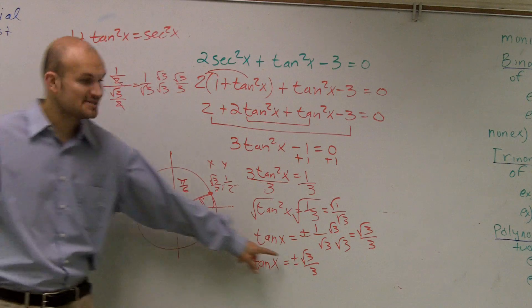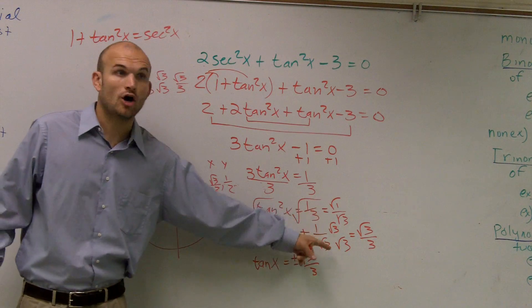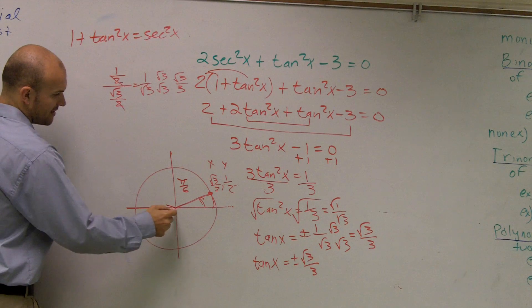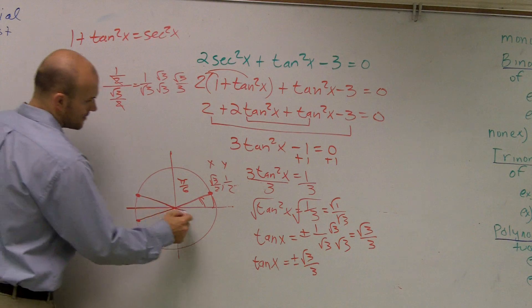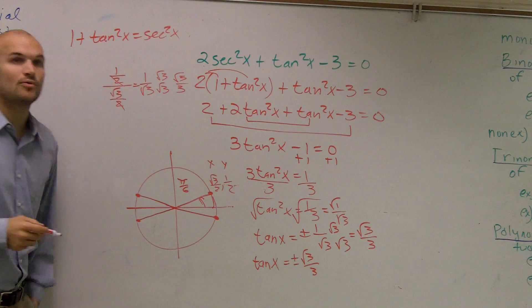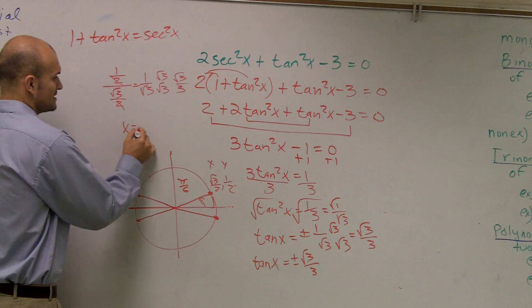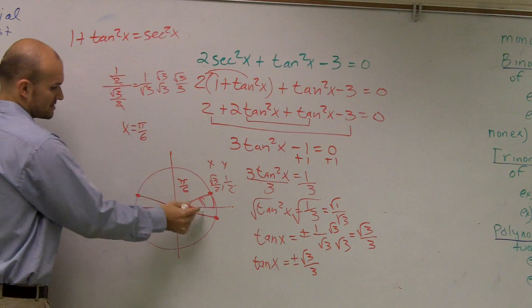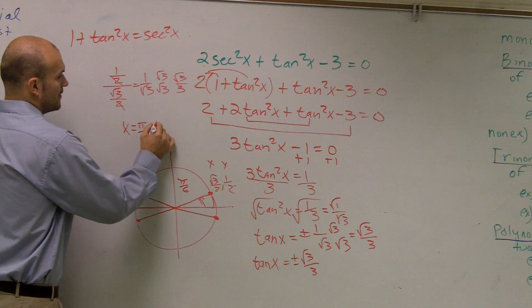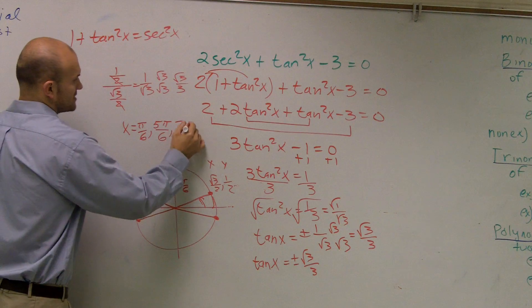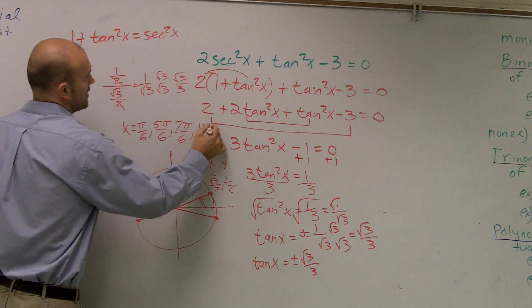But then, remember guys, this is plus or minus. So it could be all the positives. So the other positive down right here, and then the negative right here, right here. So all of these points are going to work. So this is pi over 6, so we could say x is going to equal pi over 6. This point would be 5 pi over 6, 7 pi over 6, and 11 pi over 6.